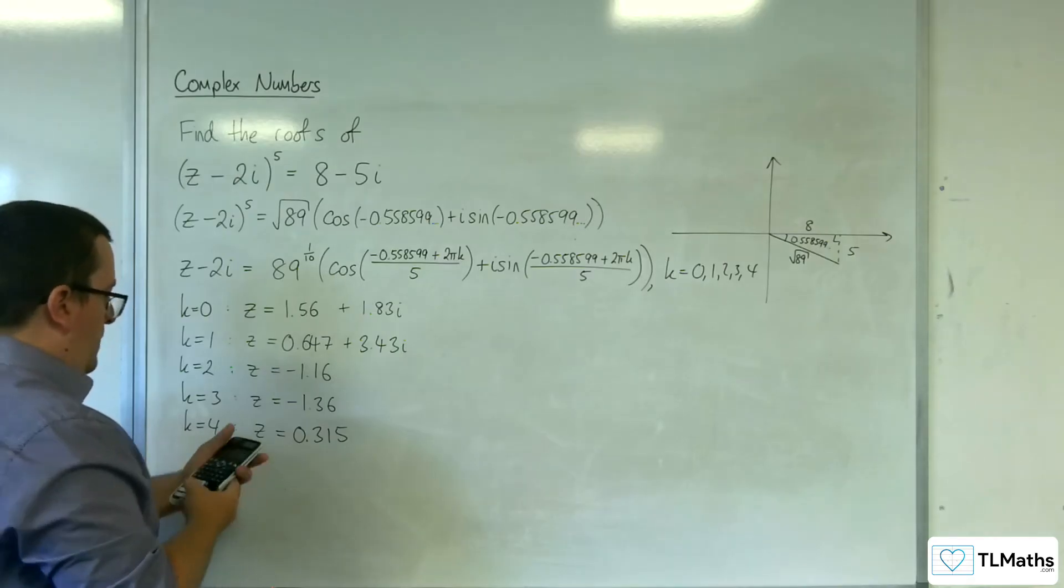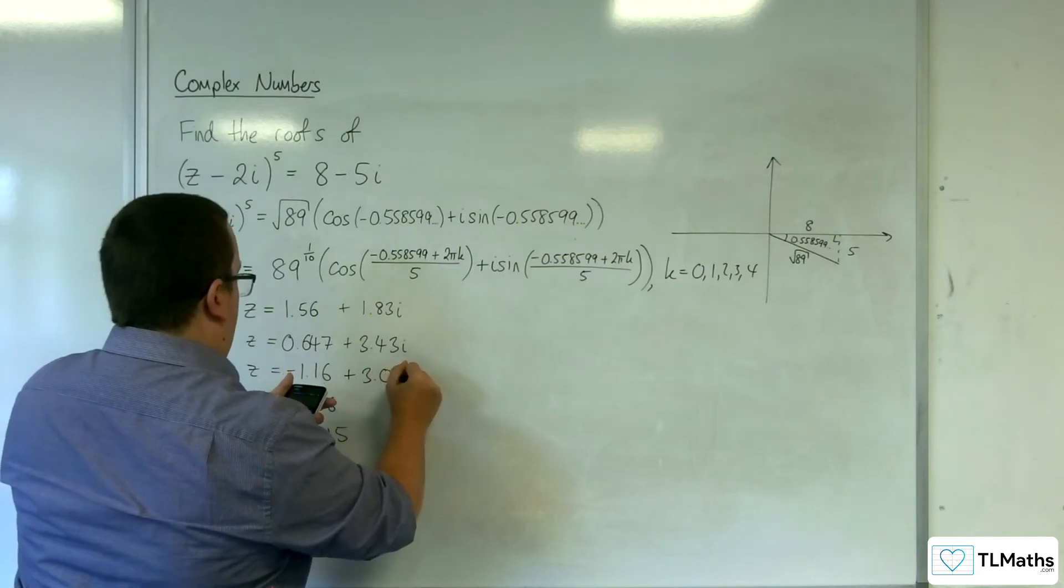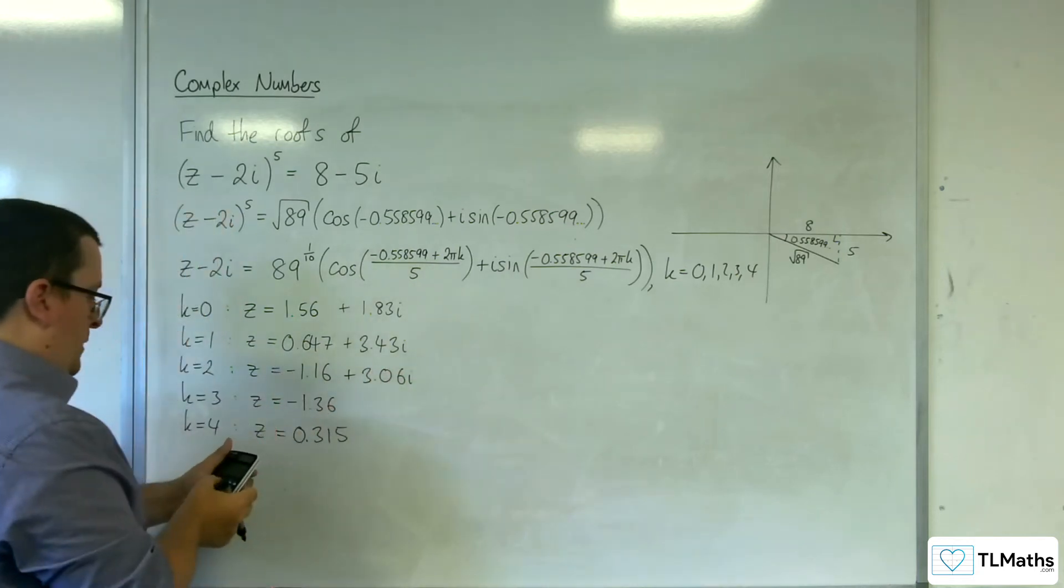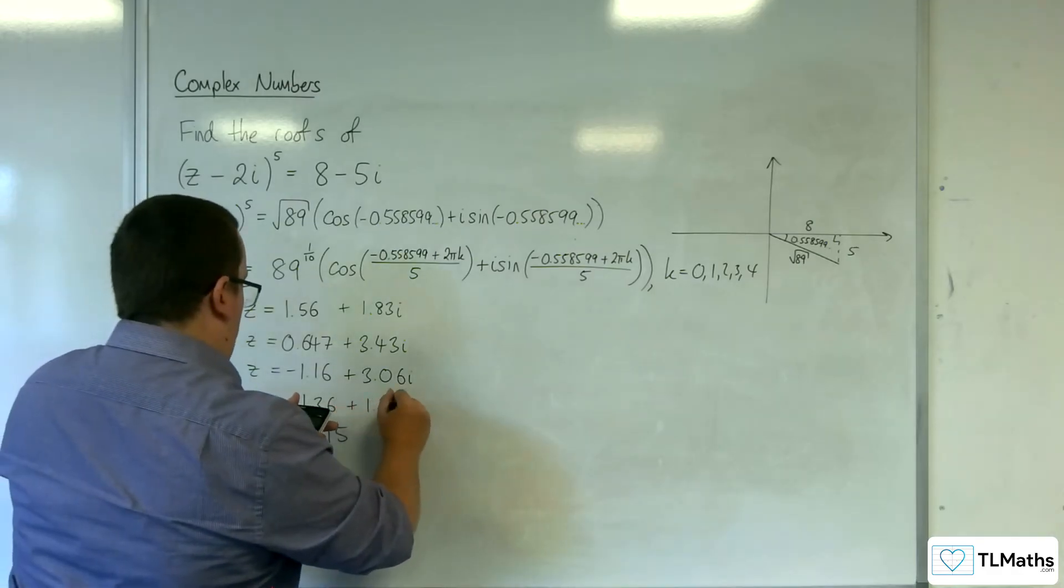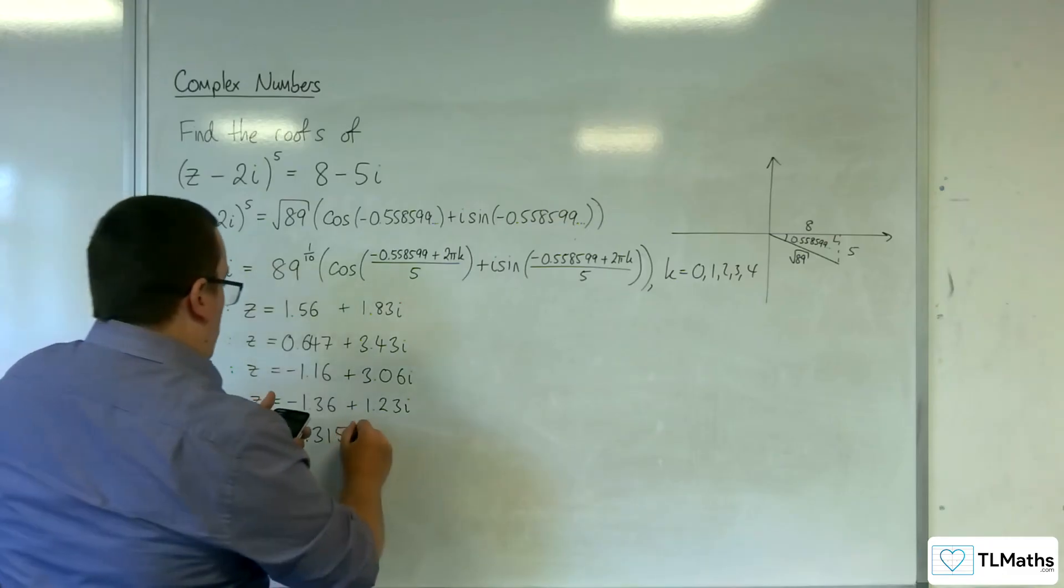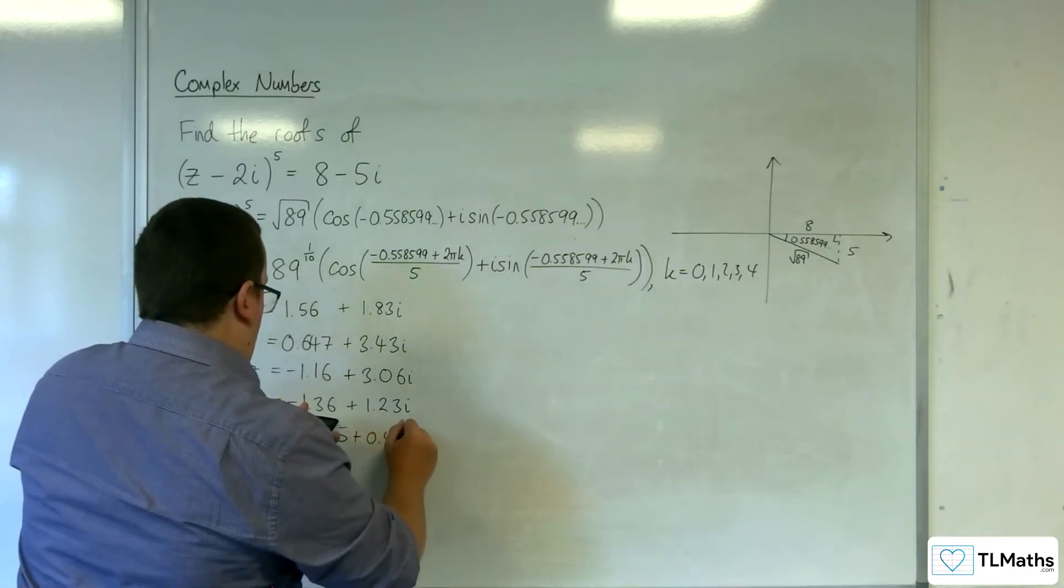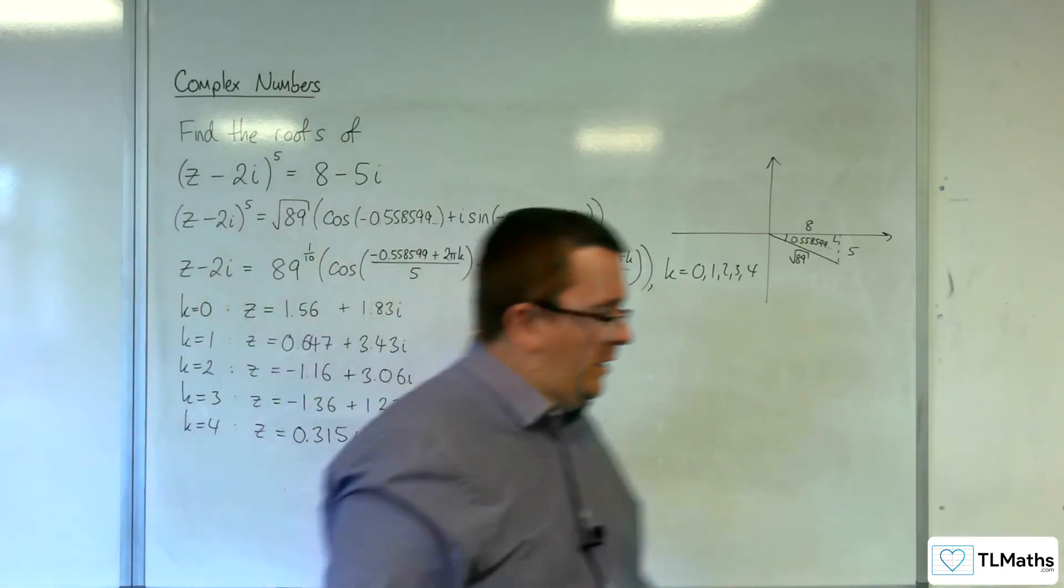Then for 4pi, we get 3.06i. Then for 6pi, 1.23i. And when k is 4, so adding on 8pi this time, we get 0.465i.